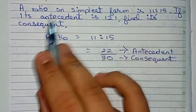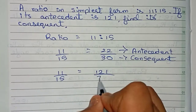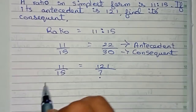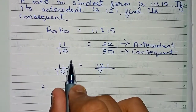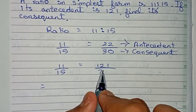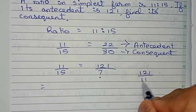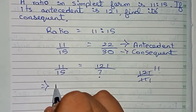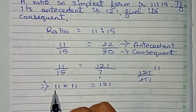Now solving this question: the ratio is 11 by 15, and it is given that the antecedent — that means the upper number — is 121. We have to find the lower number, so we place a question mark there. We need to think of a number such that 11 multiplied by that number equals 121. For that, we divide 121 by 11, which gives 11. So 11 into 11 equals 121.